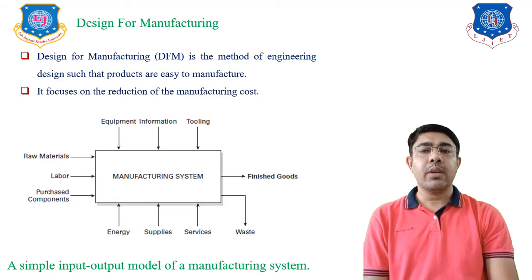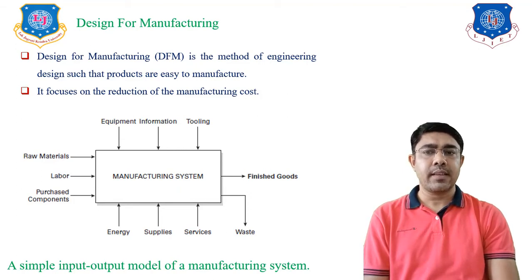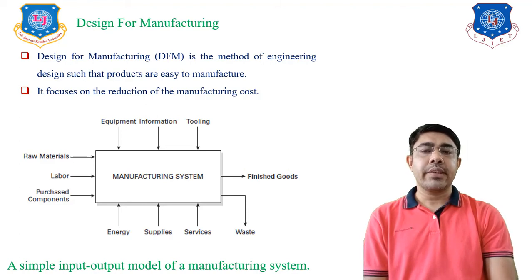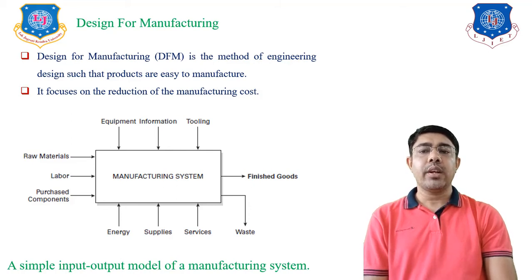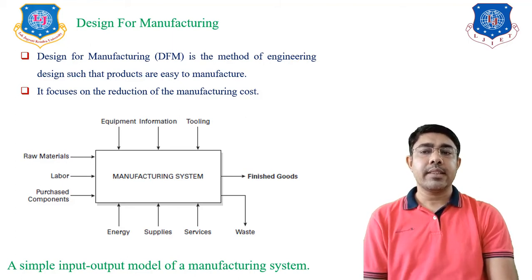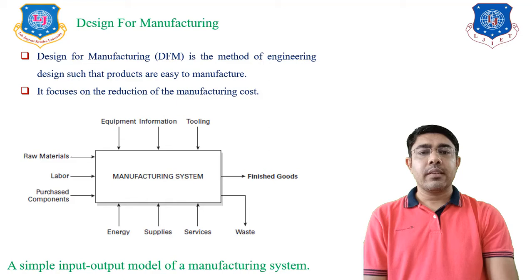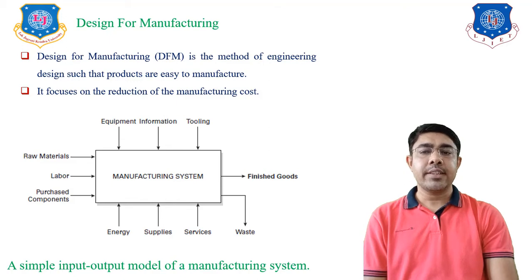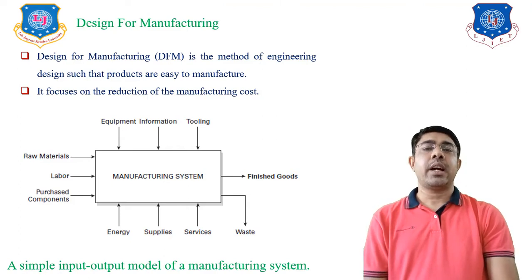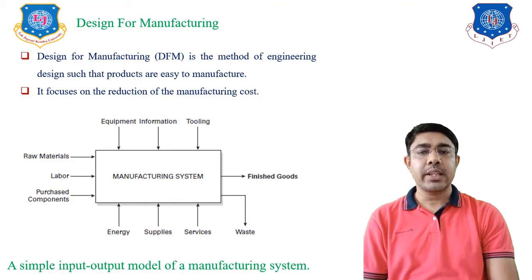To understand Design for Manufacturing, we first need to understand the Manufacturing System. Here I show the block diagram of the Manufacturing System with its inputs and outputs. The output is the finished goods and waste materials. The inputs to the manufacturing system are raw materials, labor, purchased components, equipment, information, and toolings. Also, to run the equipment we need energy, supplies, and services. The output of the Manufacturing System is the finished goods and waste materials.